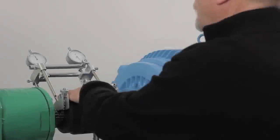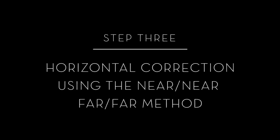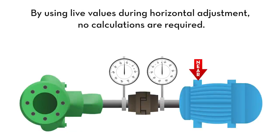With the bolts still loose, rotate the dials to the three o'clock position and make the horizontal corrections while reading live values. Use the near, near, far, far method to accomplish this. Adjust the front feet of the movable machine while watching the movable dial and adjust the rear feet while watching the stationary dial.